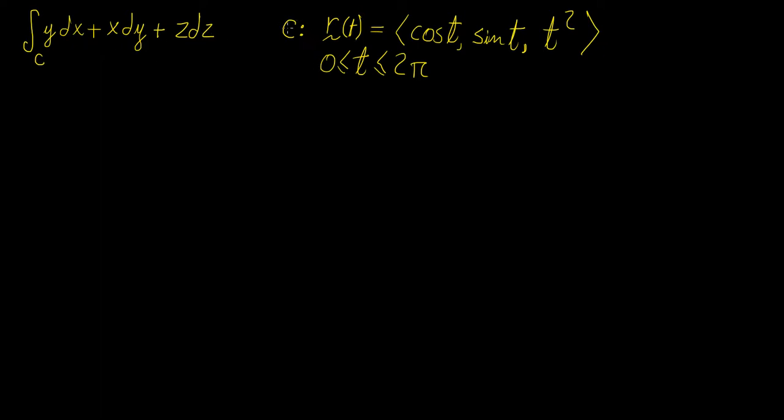We're given that the curve that we're parameterizing with respect to is defined as this: x equals cosine of t, y equals cosine of t, and z equals t squared.